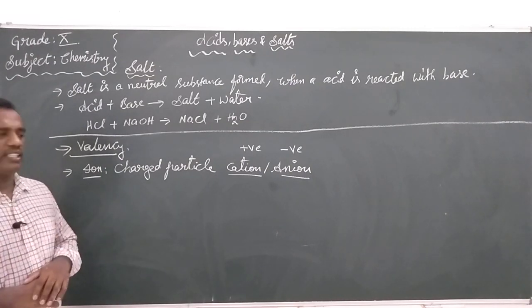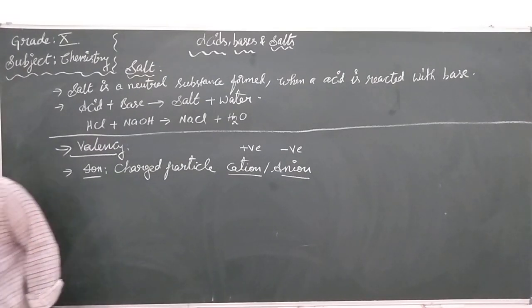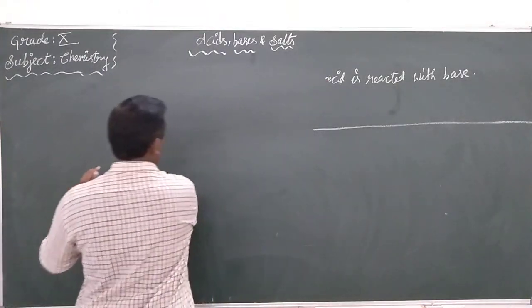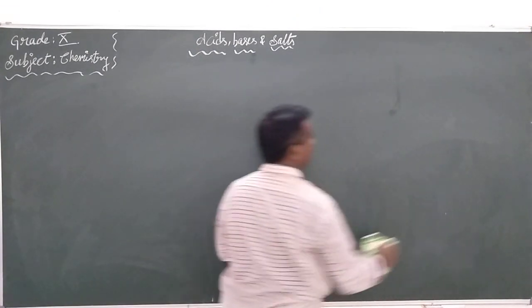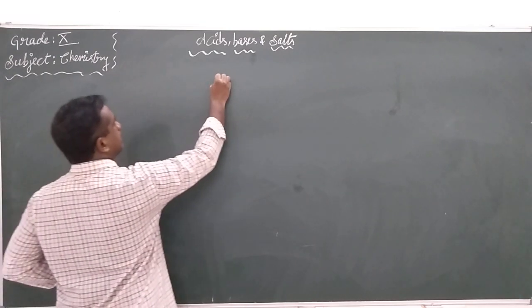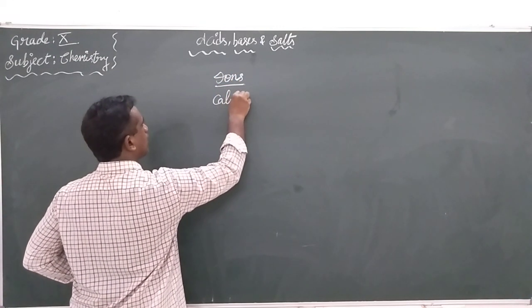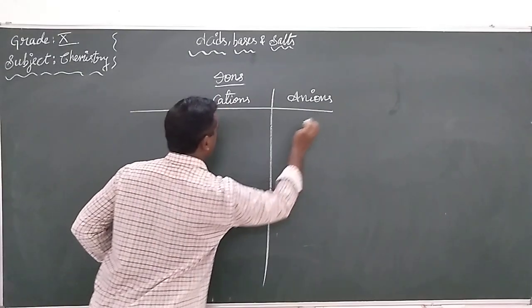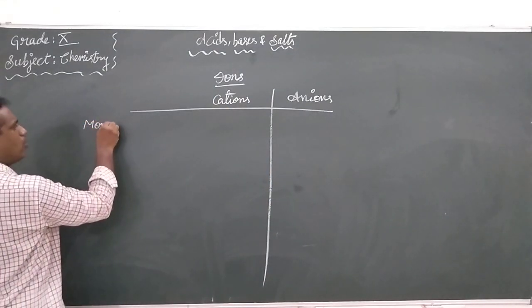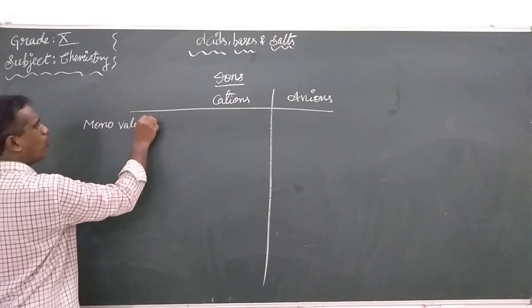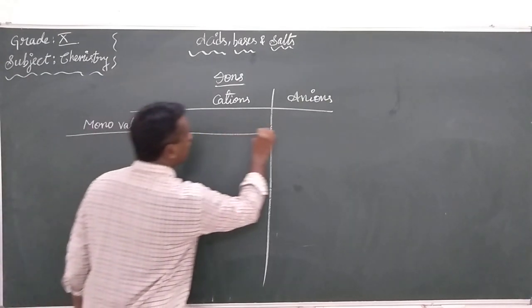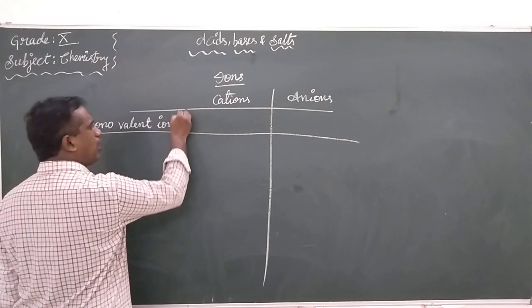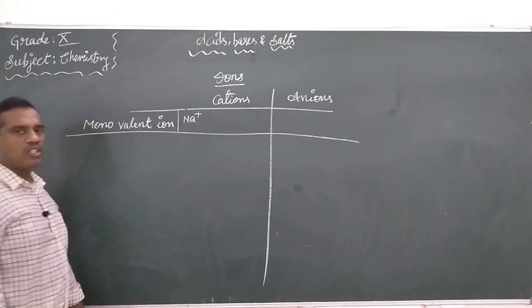If an ion has only one positive or one negative charge, we call it a monovalent ion. These ions may be cations or they may be anions. If the ion is having only one charge, it is called a monovalent ion. In cations, an example of a monovalent ion is the sodium ion.